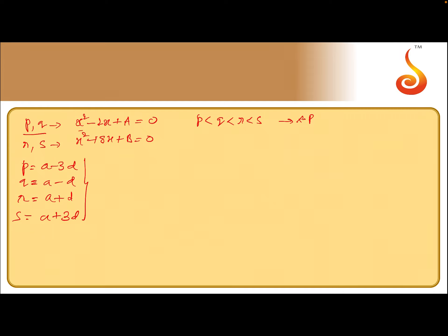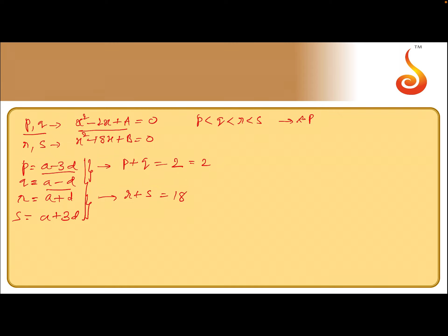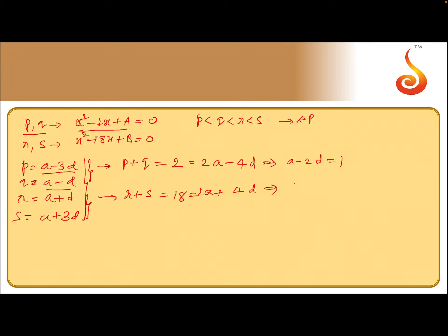Since p, q are roots of the first equation, the sum p + q = 2. Similarly, since r, s are roots of the second equation, r + s = 18. From the AP expressions: (a - 3d) + (a - d) = 2a - 4d = 2, which implies a - 2d = 1. And (a + d) + (a + 3d) = 2a + 4d = 18, which implies a + 2d = 9.